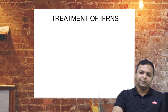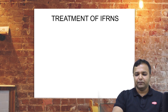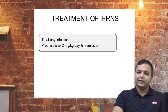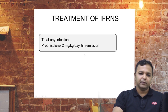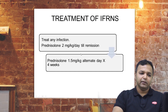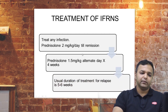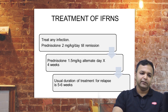If a child treated for nephrotic syndrome returns after three months with the same swelling — as 75% will relapse — treat any infection first, then start prednisolone at 2 mg/kg/day until remission (negative or trace urine protein for three consecutive days with resolution of edema). Then switch to alternate-day prednisolone at 1.5 mg/kg for four weeks. The usual duration of treatment for relapse is about five to six weeks, and infrequent relapse nephrotic syndrome is manageable in this way.